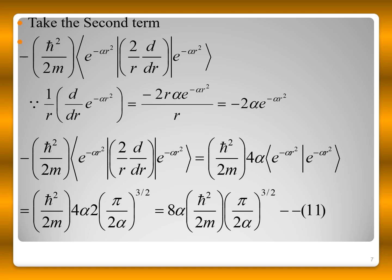For the second term, the expectation value of (1/r) d/dr: after differentiating, integrating, and applying the standard integral, this evaluates to 8α · (ℏ²/2m) · (π/2α)^(3/2).